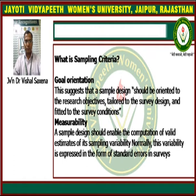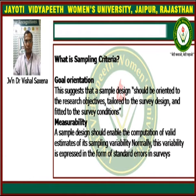Next is what are the sampling criteria. It is important that we should know what the sampling criteria are. There are criteria for the good selection of samples before sampling begins. We are dividing it into four parts. The first point is goal orientation: a sample design should be oriented to research objectives, tailored to the survey design, and fitted to the survey conditions.